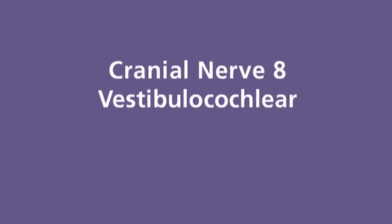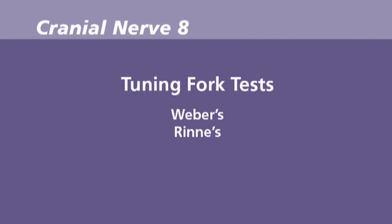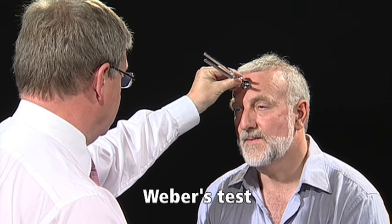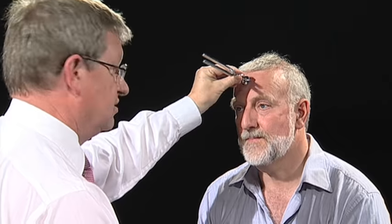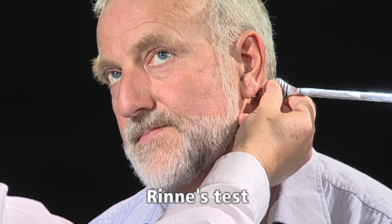The eighth nerve, the vestibulocochlear, has auditory and balance functions. I'm going to test your hearing by covering one ear and whispering a number in the other. If I detect any hearing deficit, I would move on to the tuning fork tests. This is a Weber's test — can you hear that vibrating? Does it sound louder on one side or the other? It's the same on both sides — that's normal. I'm now going to do the Rinne test. Can you hear that vibrating? Please tell me when it stops. That's a normal Rinne test. I would now go on to repeat the test on the opposite side.